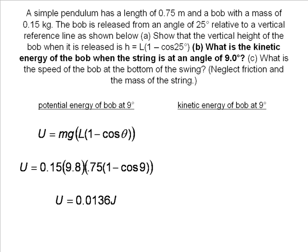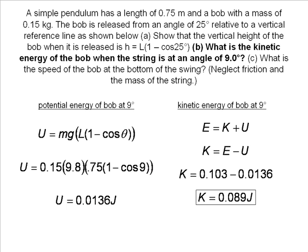Next, we will find the kinetic energy at 9 degrees. The law of conservation of energy says the total energy is constant. We rearrange the equation to isolate K, input our values, and find the kinetic energy.